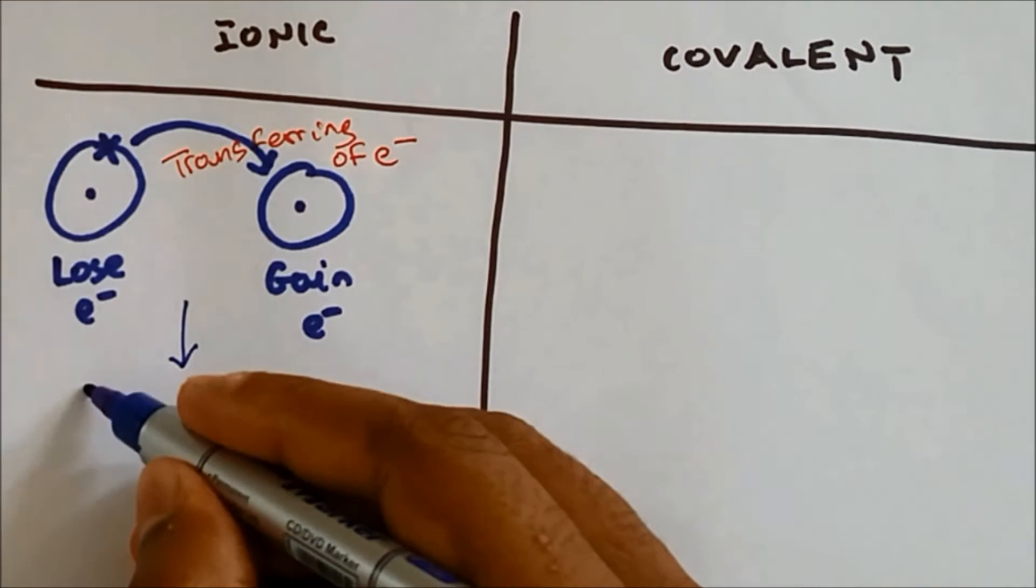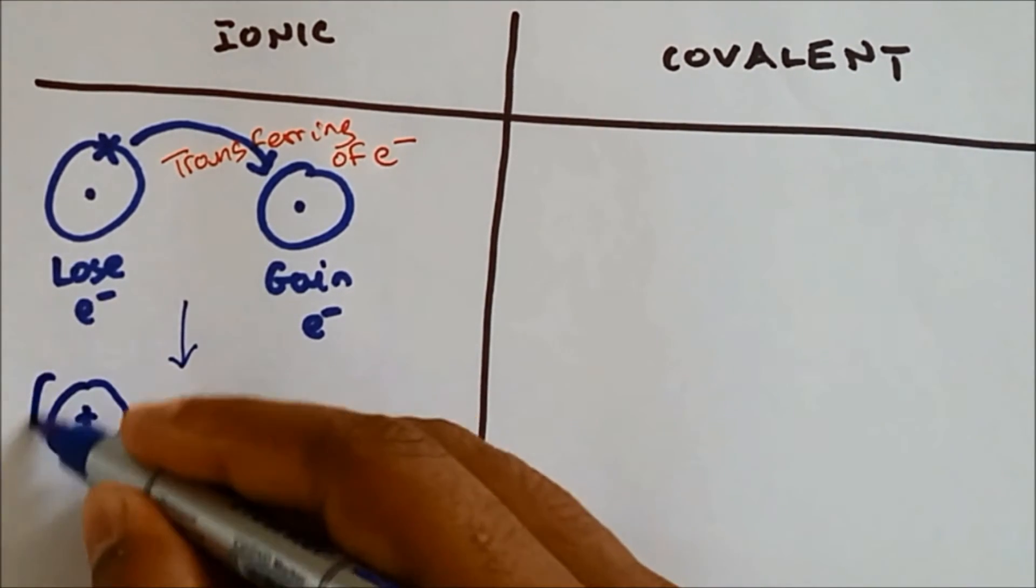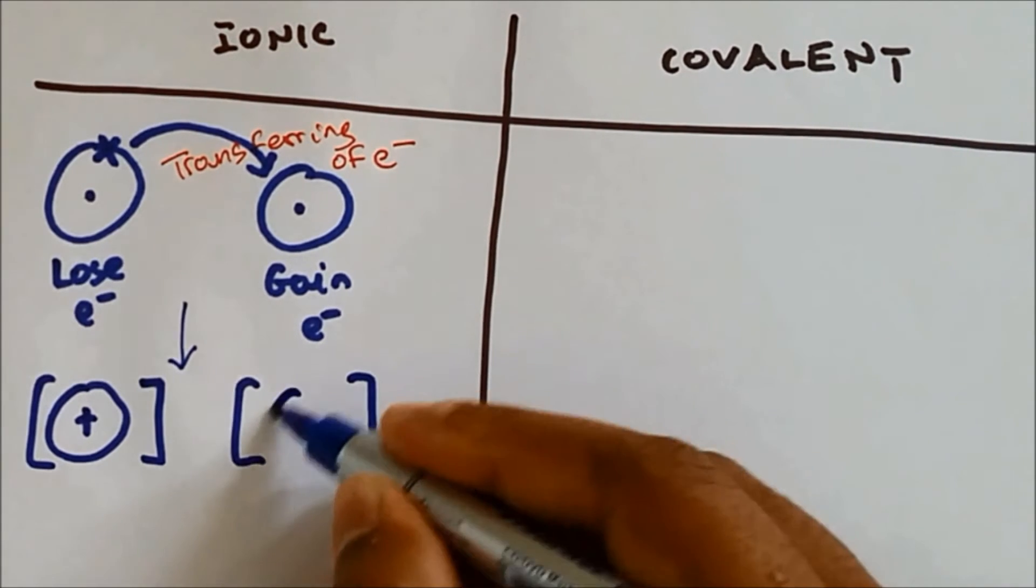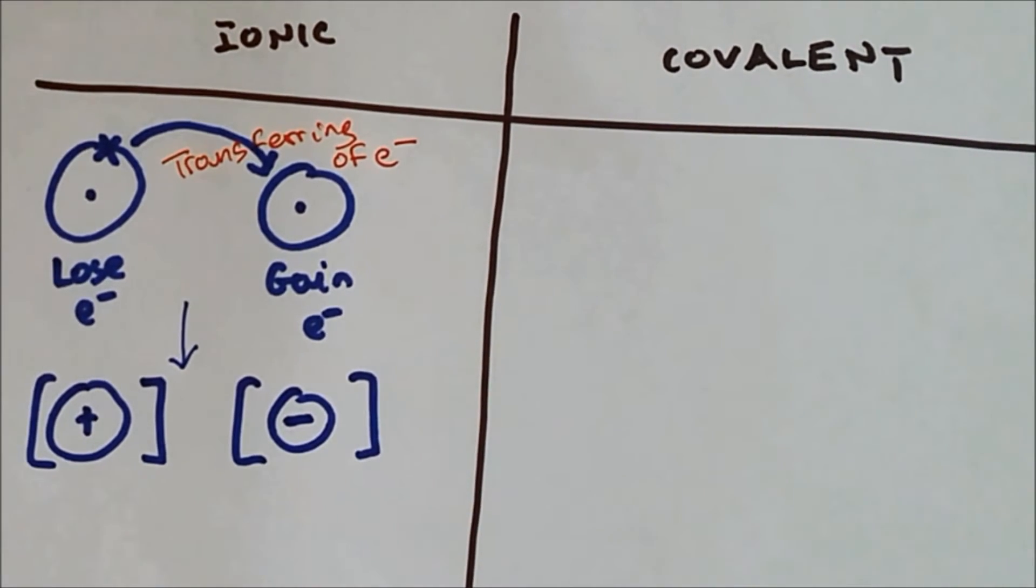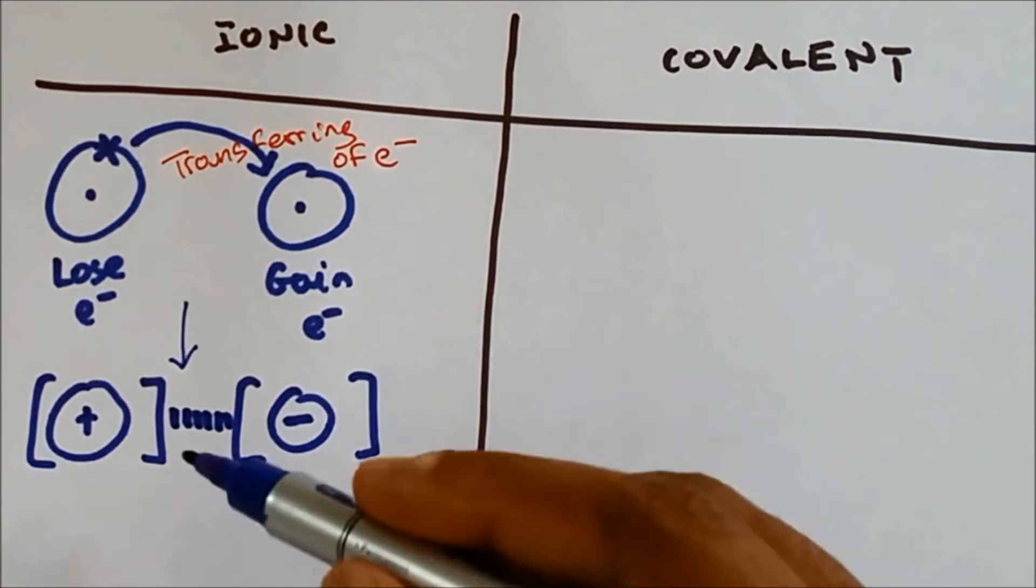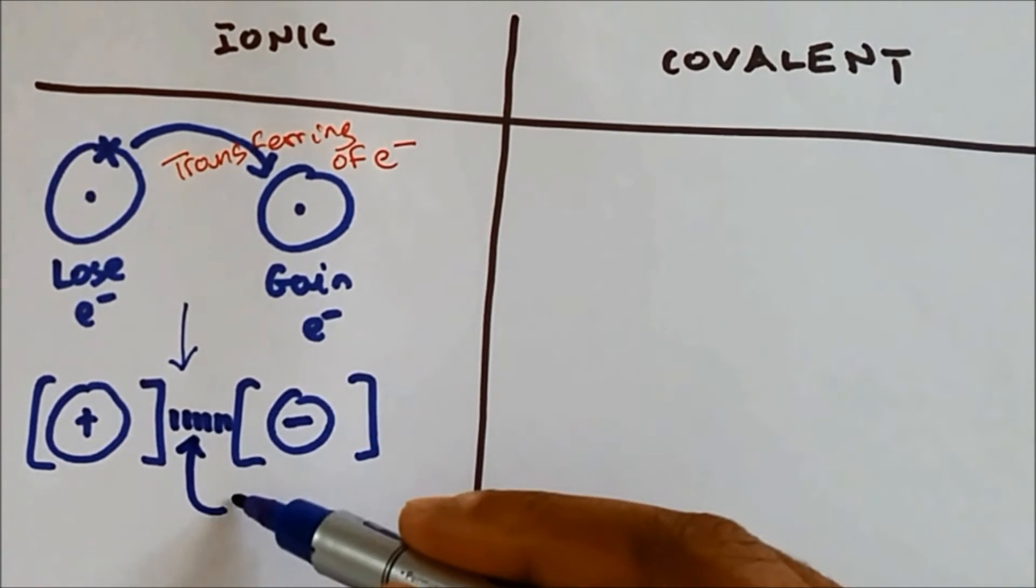The atom which has lost the electron forms into positive charge and the atoms which has gained electrons form into negative charge. And we know that opposite charges have attraction and this attraction is called ionic bonding.